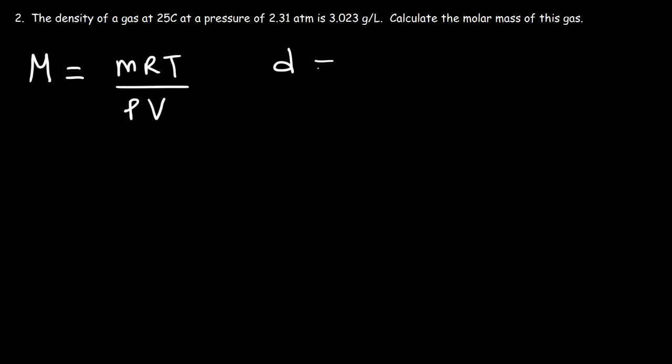Now we know that the density is mass divided by volume. So therefore, we could replace M over V with D, because D equals M over V. So we could say that the molar mass of a gas is the density times R times the temperature divided by the pressure.